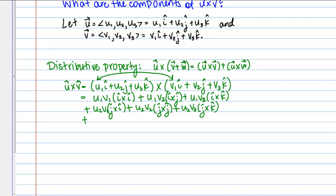Plus U3 V1 k cross i, plus U3 V2 k cross j, and then finally plus U3 V3 k cross k.